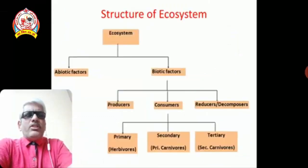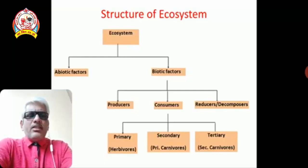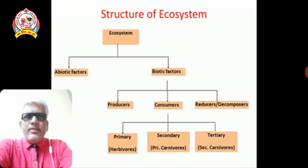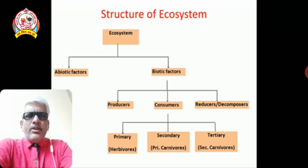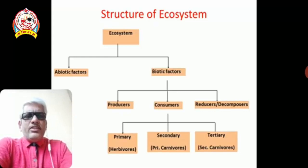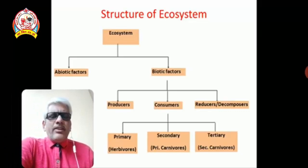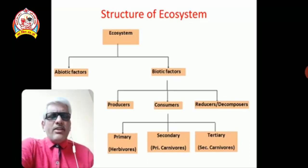Now we come to the main part — the structure of the ecosystem. The question arises: what is the ecosystem actually made up of, and what is its structure? Generally, the ecosystem is made up of two important components: first, the abiotic component, and second, the biotic component. A flowchart gives an idea of the different structural components, and we will see each one by one in the next slides.